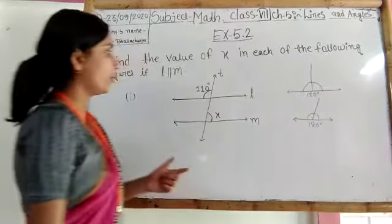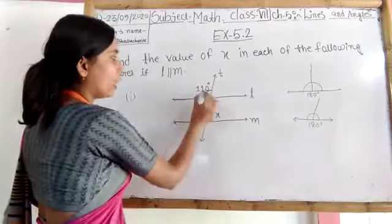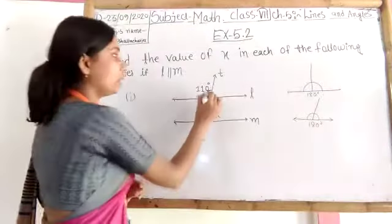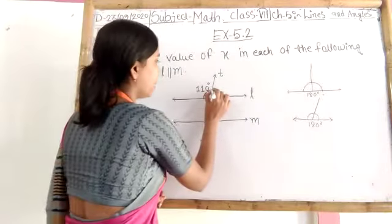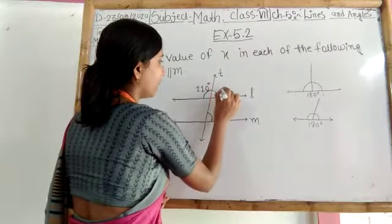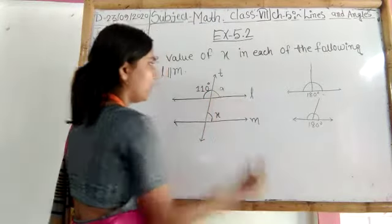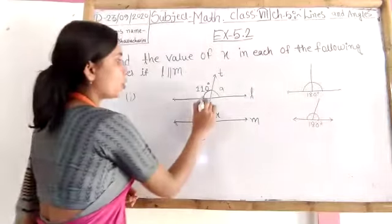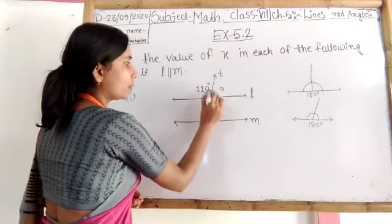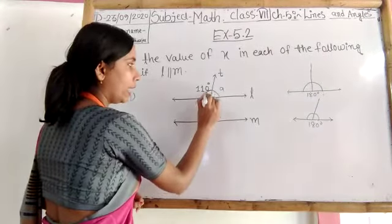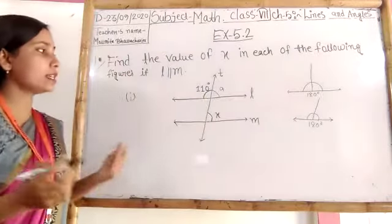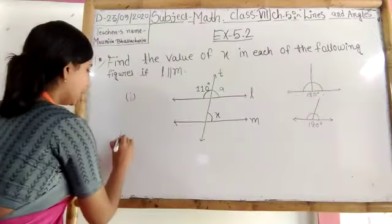So in this way here given 110 degree. Other part is not given. I think that the name of this angle will be small a. So what will be the value of this whole angle? This is very easy. Can I write the answer?